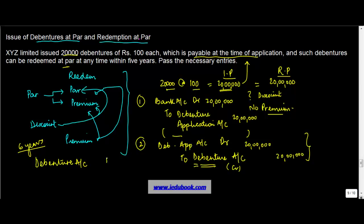So you debit the debenture account by 20 lakh because that's the amount that you have to pay for debentures, and you credit your bank account by equivalent amount. So these are the accounting entries that you do when you issue a debenture at par and also redeem them at par.